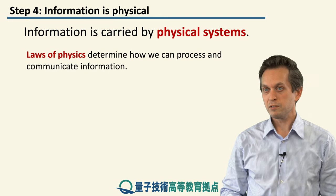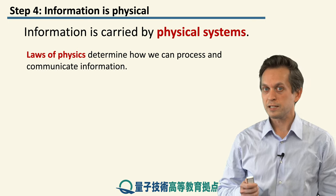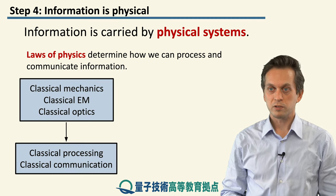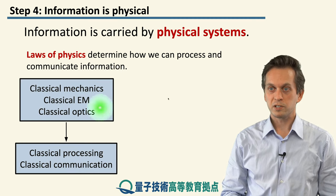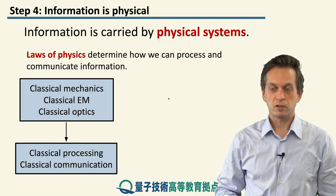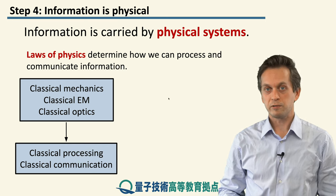Therefore, the laws of physics determine what we can do to the information and how we can process it, and in particular, in our context, how we can communicate it. If we are only considering information processing in the context of classical mechanics, classical electromagnetism, and classical optics, then this will give us tools and ways of processing the information classically, and also communicating it classically.